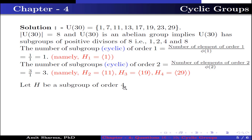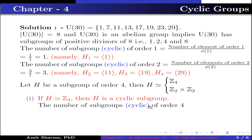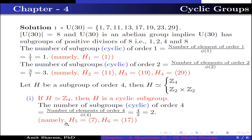Now let H be a subgroup of order 4. This implies H is either isomorphic to Z4 or isomorphic to Z2 × Z2. Case 1: If H is isomorphic to Z4, then H is a cyclic subgroup. The number of cyclic subgroups of order 4 equals the number of elements of order 4 divided by φ(4), which is 4/2 = 2. The subgroups are H5 generated by 7, and H6 generated by 17, because 7 and 17 are of order 4.